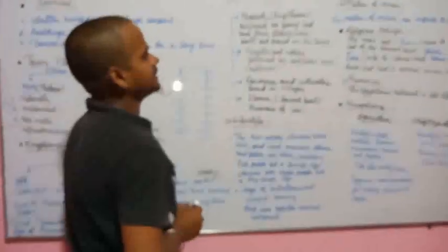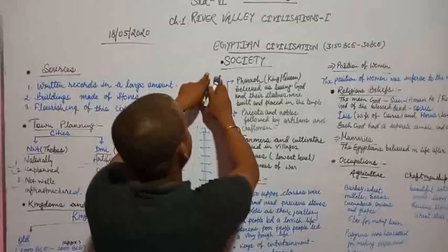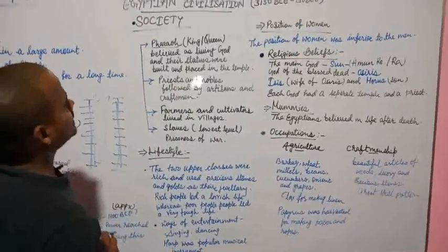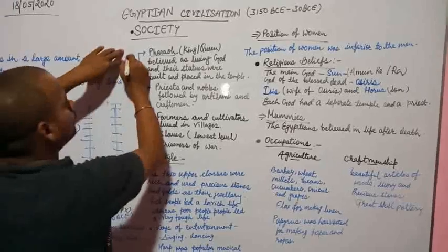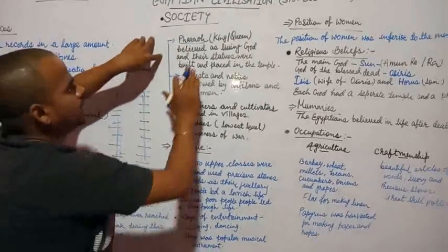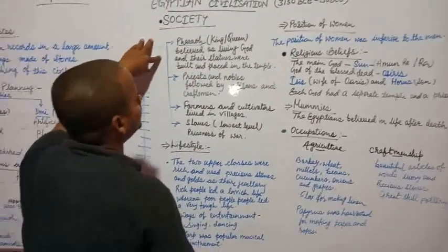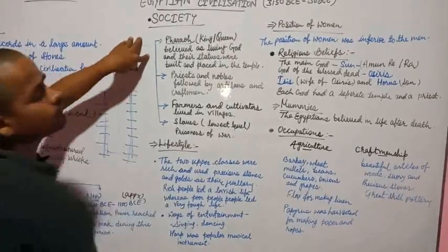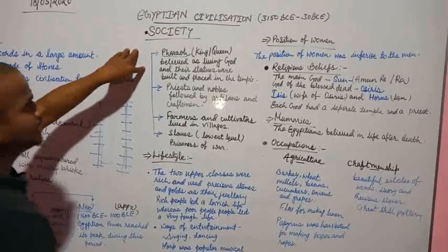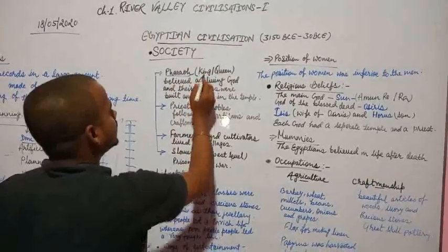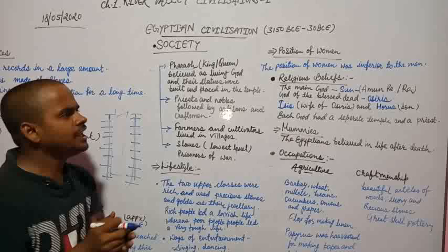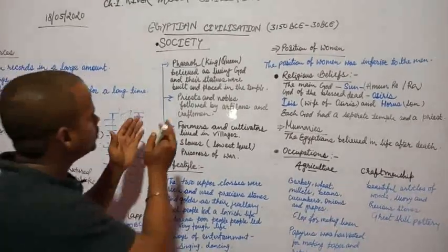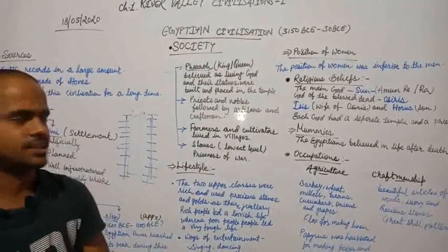Society. During this Egyptian period, Pharaohs were believed as living God and their statues were built and placed in the temple and worshipped as well.